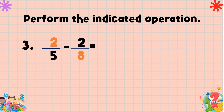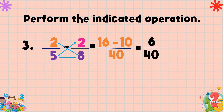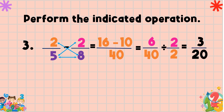Another example: two fifths minus two eighths. Two times eight equals sixteen; five times two equals ten; the denominator is five times eight equals forty. Subtract the numerators: sixteen minus ten equals six. Copy the denominator, forty. Are there any common factors between six and forty? Yes — both are divisible by two. Six divided by two is three, and forty divided by two is twenty. Therefore the lowest term of six over forty is three over twenty, and this is our final answer.